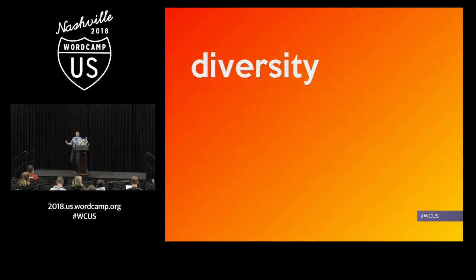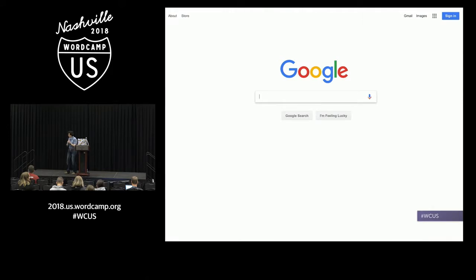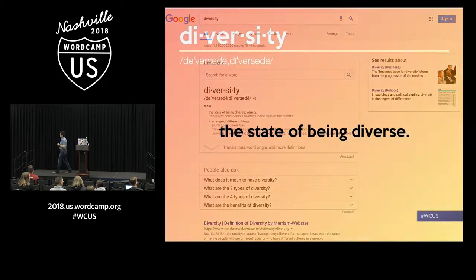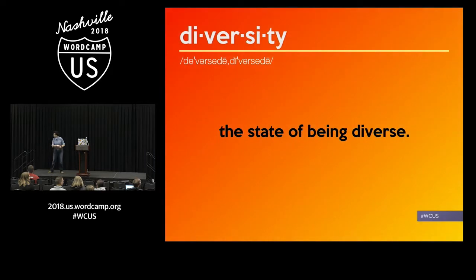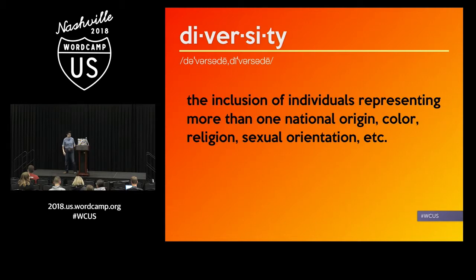Of course, we start with Google, and let's see what Google can say for us. Basically, it says 'the state of being diverse.' That doesn't help. But if we look a little bit further, we get this definition. This is a little bit more standard in what we think about when we think about diversity.